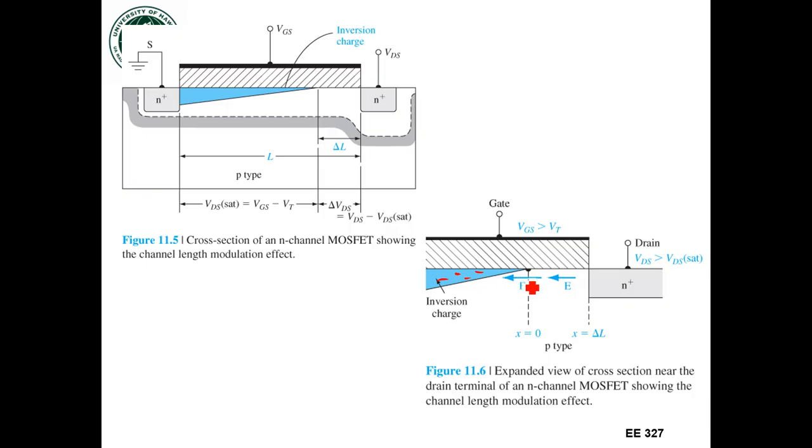once they get to the edge of the space charge region, there's an electric field here that will accelerate them through the space charge region into the drain. So I'm still getting current through this structure.